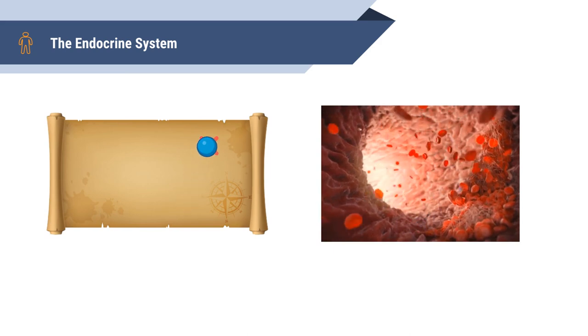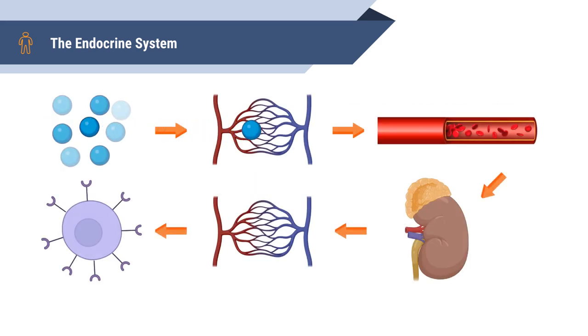This is done via the bloodstream, as the hormones diffuse into the capillary beds and enter the circulatory system. When the hormones reach the target cell, the hormones then diffuse out from the target's capillary bed and interact with the cell's receptors, allowing for the desired response to occur.